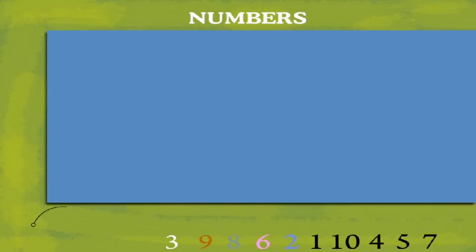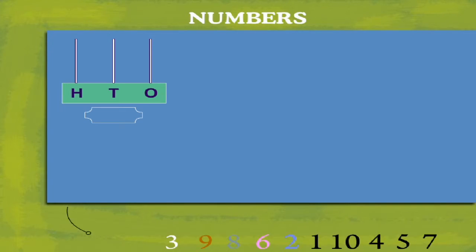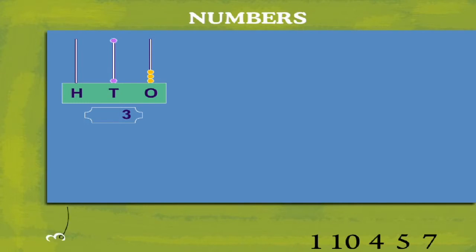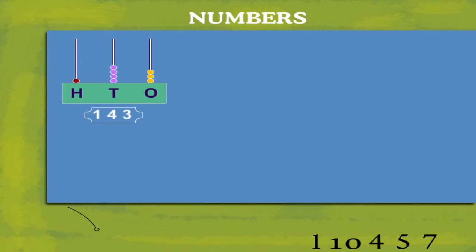Numbers. Let's make numbers. Here is the first number. Three ones: one, two, three and four tenths. One hundredths is one hundred and forty three.